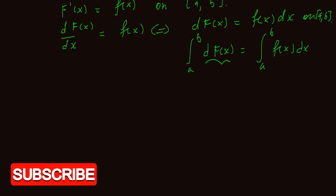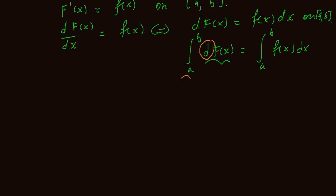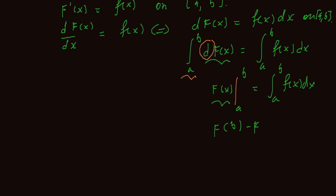So finally, the integral of the derivative of capital F of x — the integral from A to B on the left side, and the right side is the integral from A to B of f of x dx — evaluates to: F of B minus F of A is equal to the integral from A to B of f of x dx.